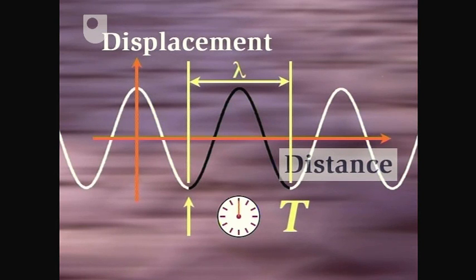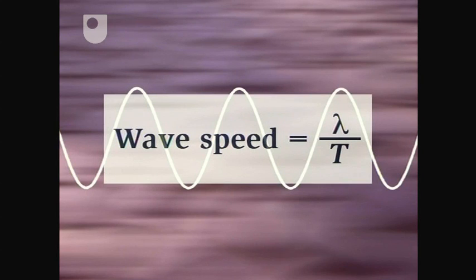So the speed of the wave, which is defined as the distance travelled divided by the time taken, is simply the wavelength divided by the period.